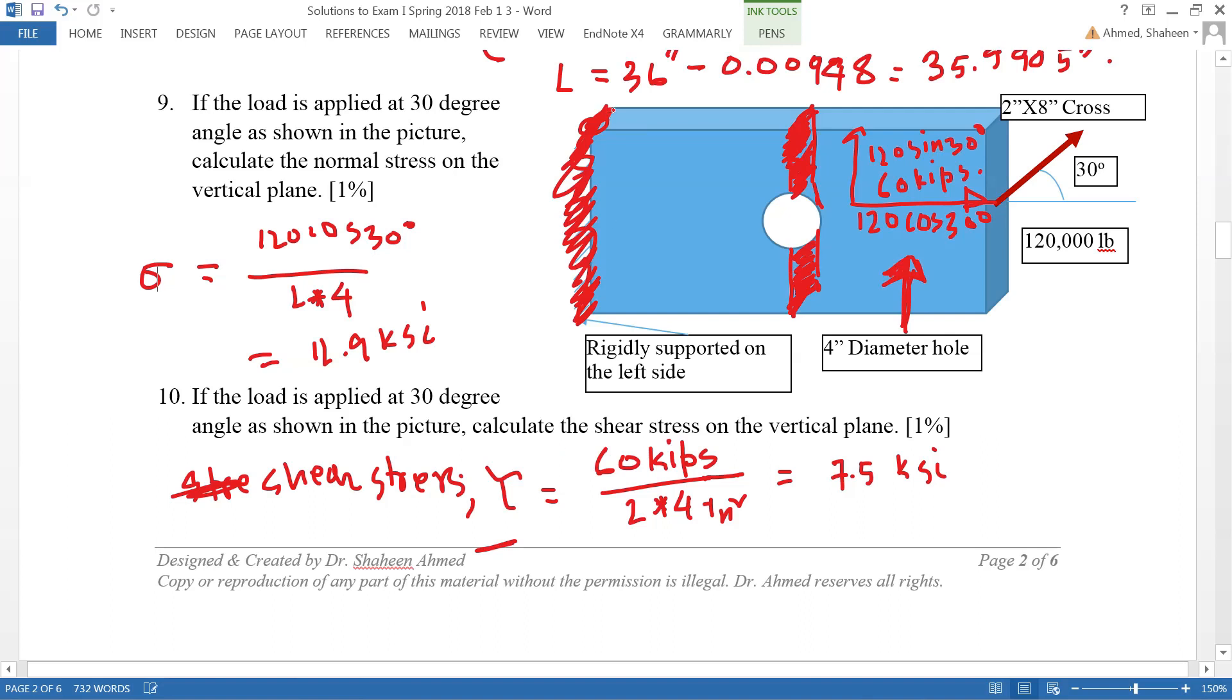One of the common mistakes in the class, when students were asked this question in the exam, they use the wrong area. Remember this area is bigger, it is 2 by 8, so you're gonna end up calculating a much lower stress, and that's not right.